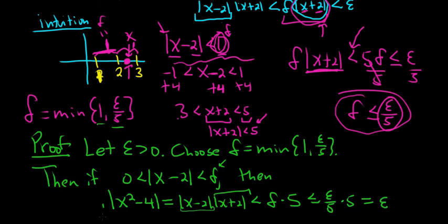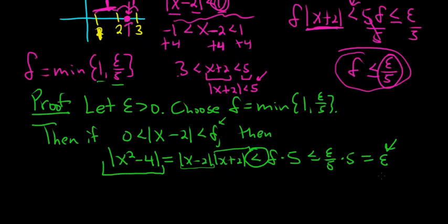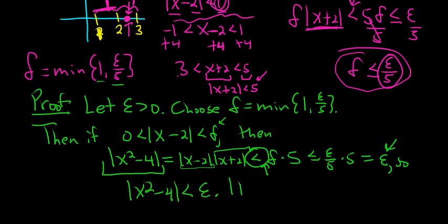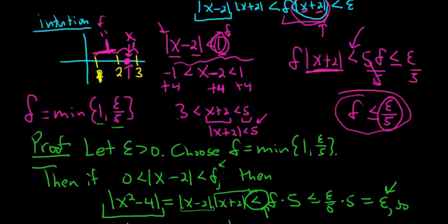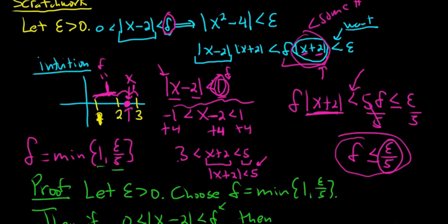So we have the absolute value of x squared minus 4 less than epsilon — taking the strongest inequality. That's what we had to show, and that completes the proof. I kind of rushed through the video, so let me go back quickly. This is the key step — the step that everyone gets stuck on.